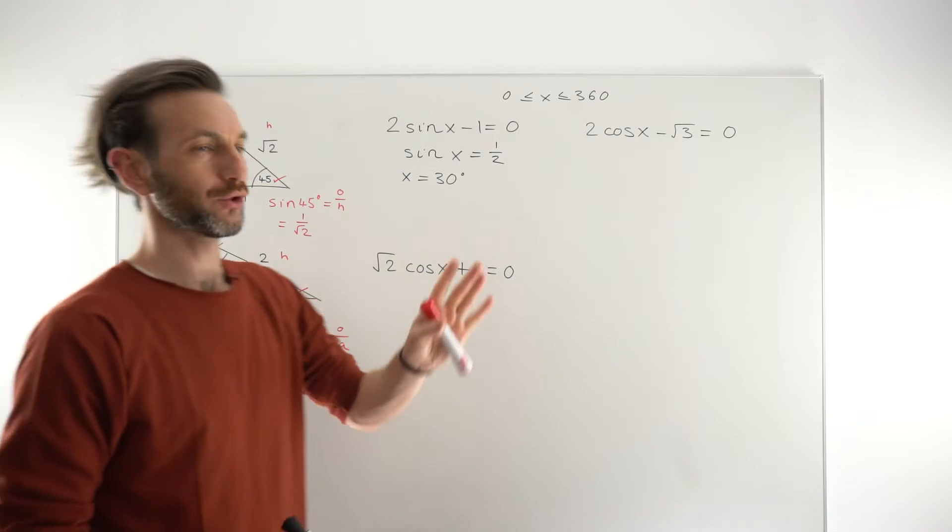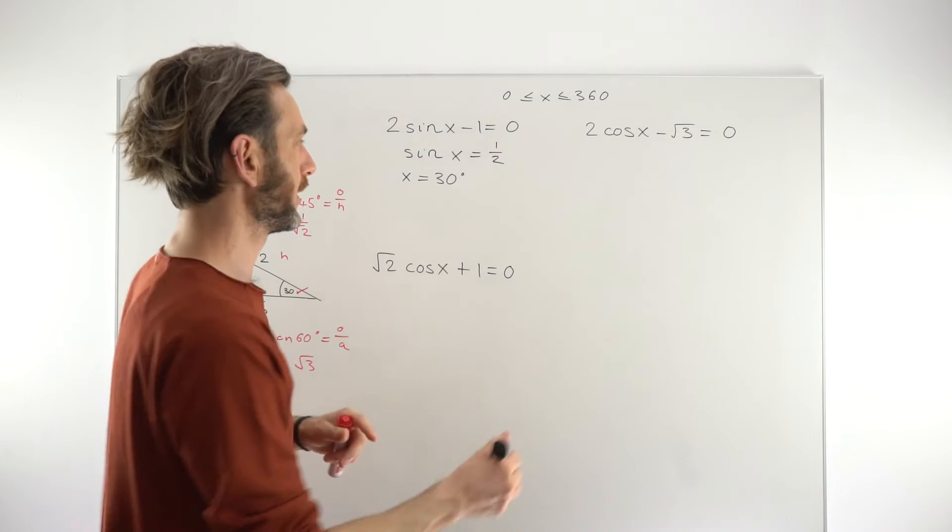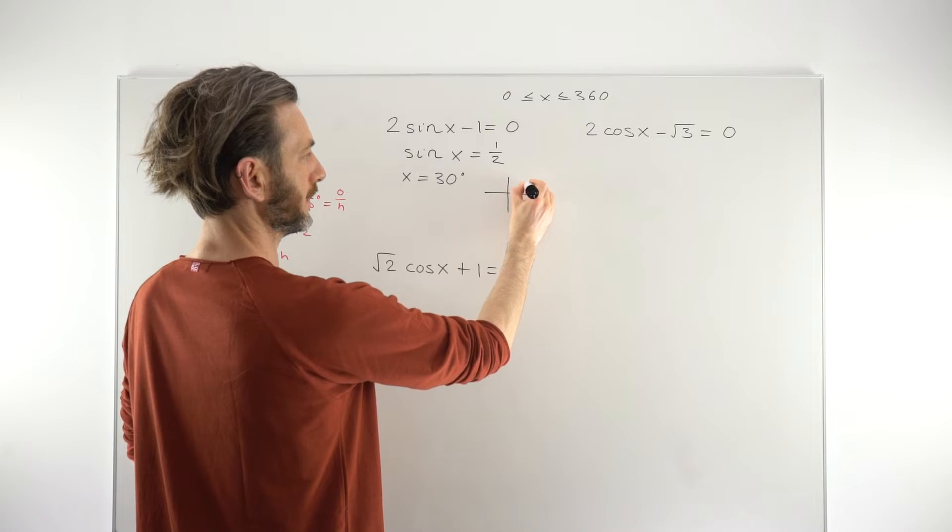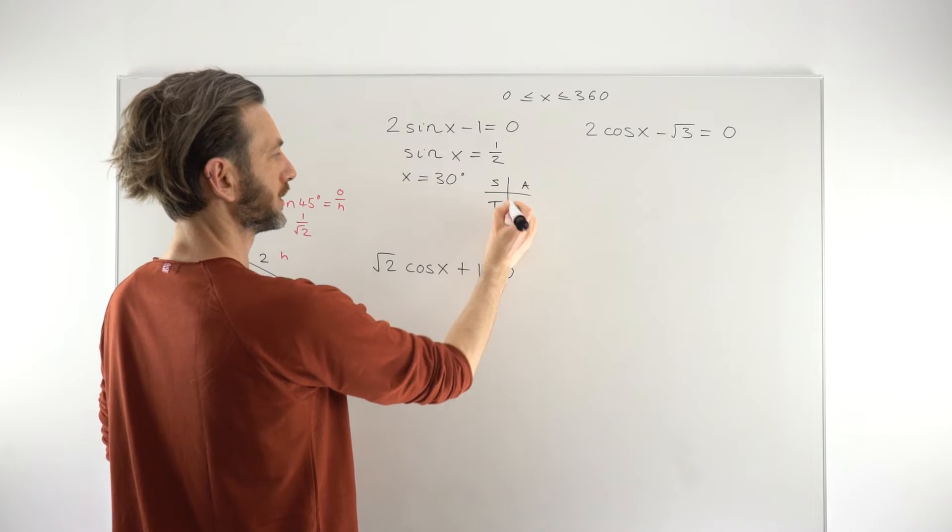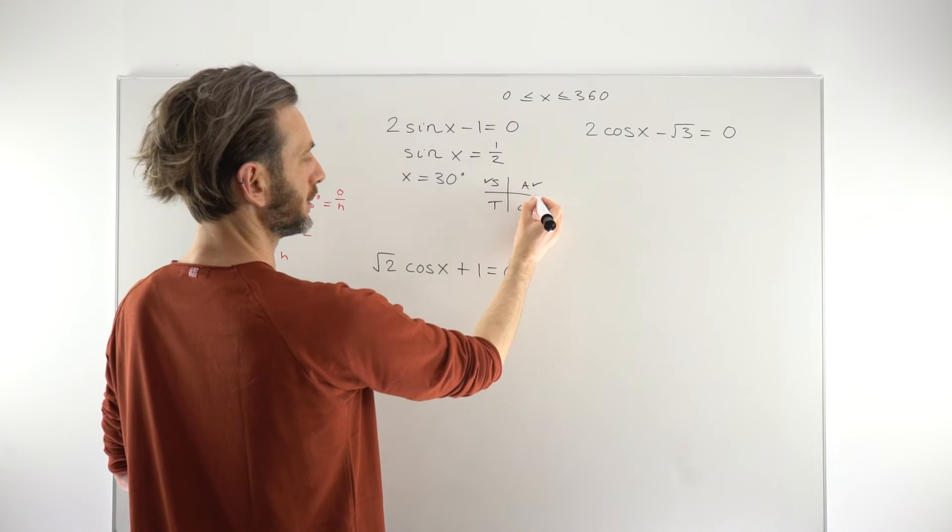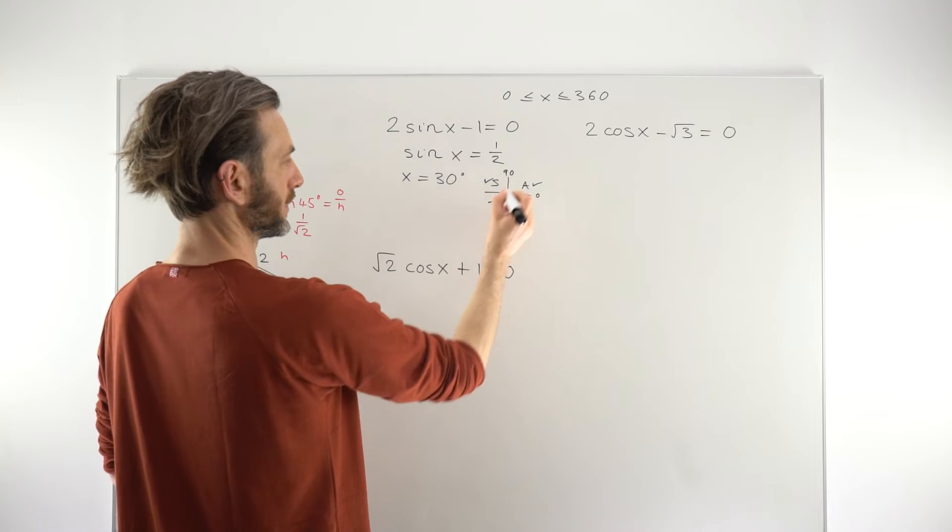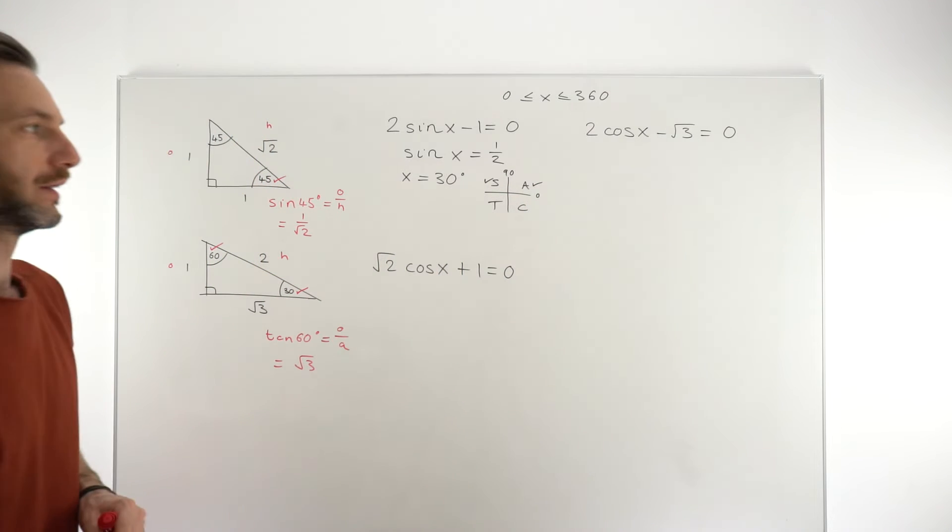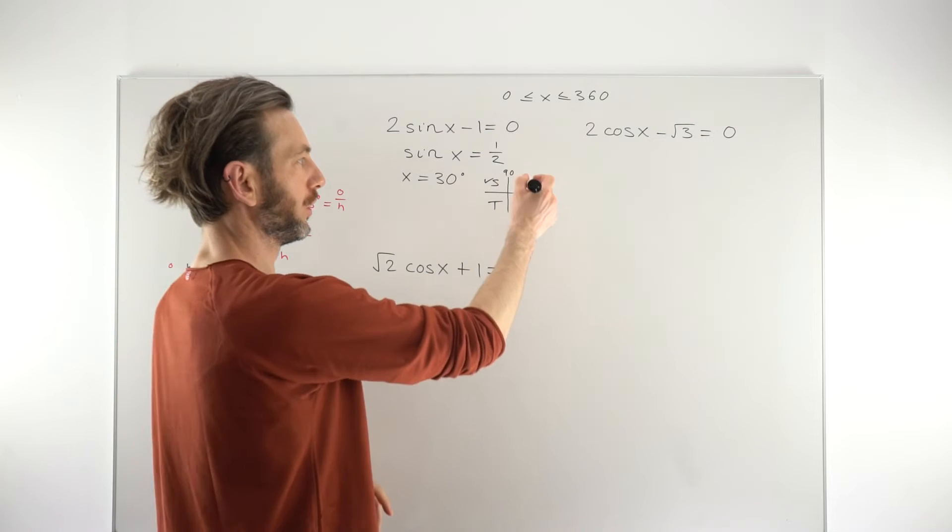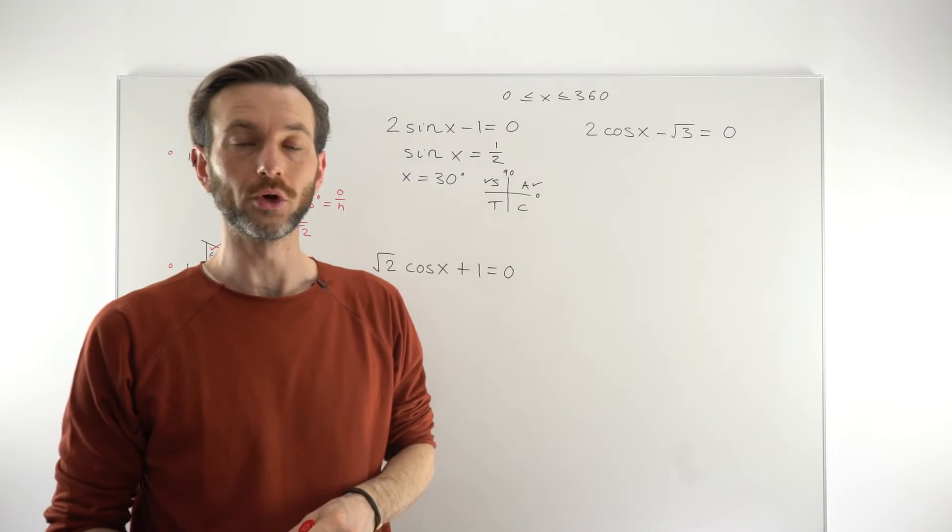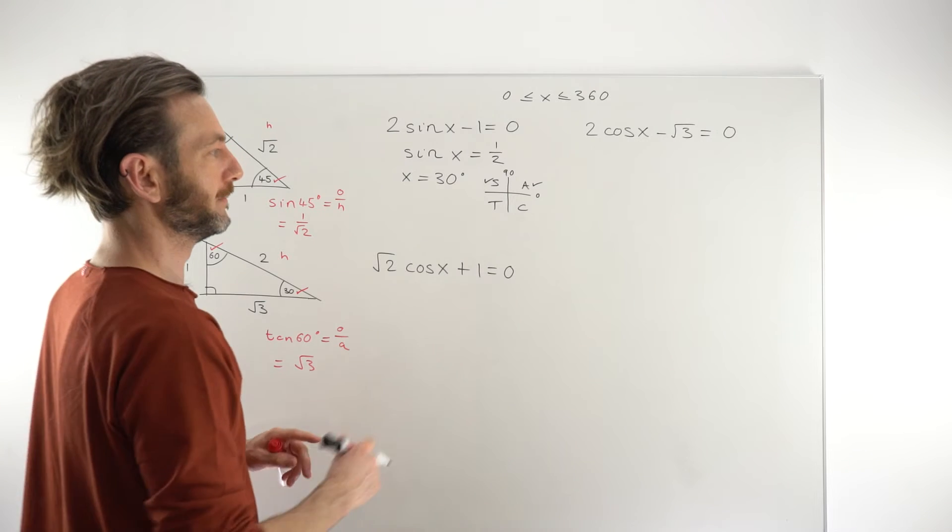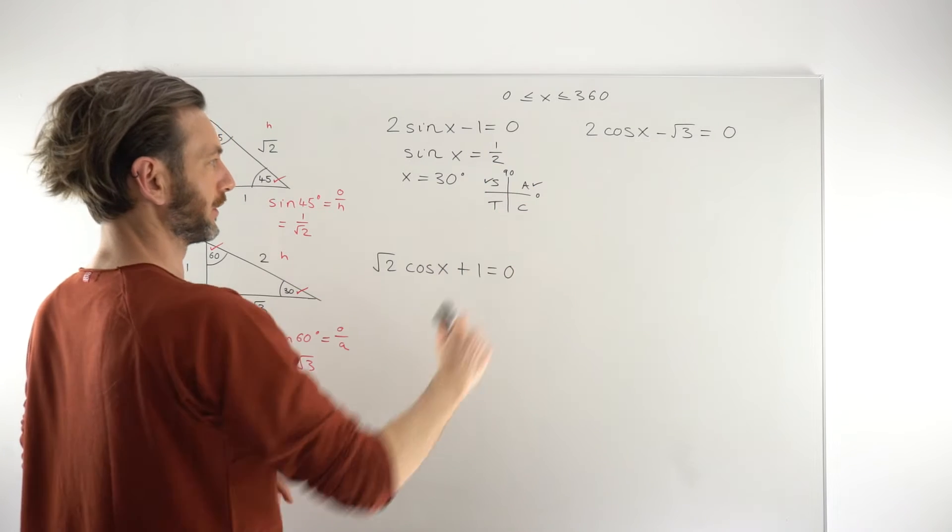If you've done some trig equations already, you'll know about the use of the cast diagram. So, we need a little cast diagram just to check that that is indeed in the correct quadrant. Sine equals a positive value. So, we'll be checking here and here. That's 0 to 90. So, 30 degrees is in there. So, that is a valid solution. If you're not sure about the cast diagram, if you've never seen that before, then try to follow along. You can check out another class, which is just about the cast diagram, and that will help you figure this all out.